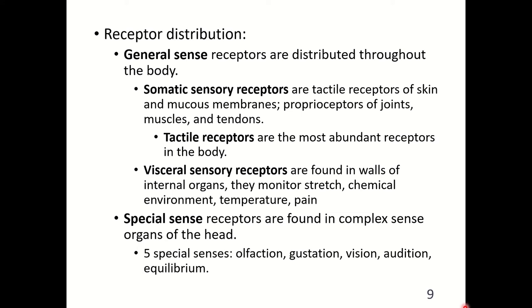Visceral sensory receptors are found in walls of internal organs and monitor stretch, chemical environment, temperature, and pain — these will vary in their adaptation. Special sense receptors are found in complex sense organs of the head. There are five special senses: olfaction (smell), gustation (taste), vision (sight), audition (hearing), and equilibrium or balance.